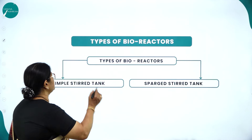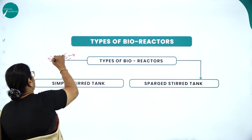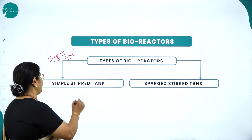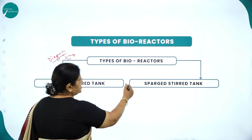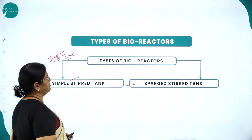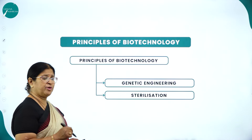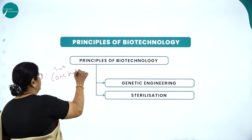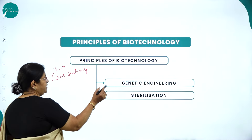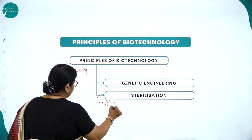Types of bioreactors — this is also very important and they will definitely ask the diagram of a bioreactor. The types are: simple stirred tank bioreactor and sparged stirred tank bioreactor. The principles of biotechnology are based on two core techniques: genetic engineering and bioprocess engineering.